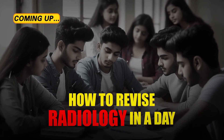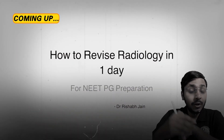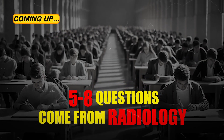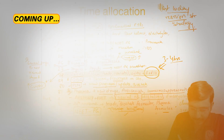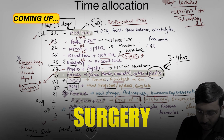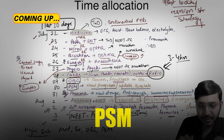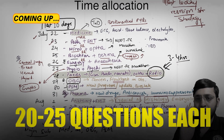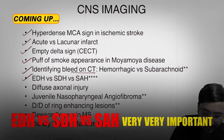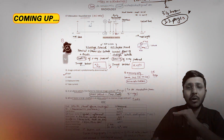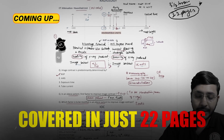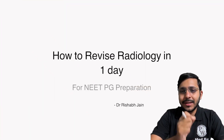How to revise radiology in a day — in fact, how to revise radiology in less than a day, that is four hours. Five to eight questions come from radiology. Major subjects are medicine, surgery, OBG, and PSM — these are the four major subjects which have 20 to 25 questions each. Mock appearance, identification of bleed on CT, EDH, SDH, SCH — very important. I've covered all important topics and concepts in this PDF in just 22 pages.